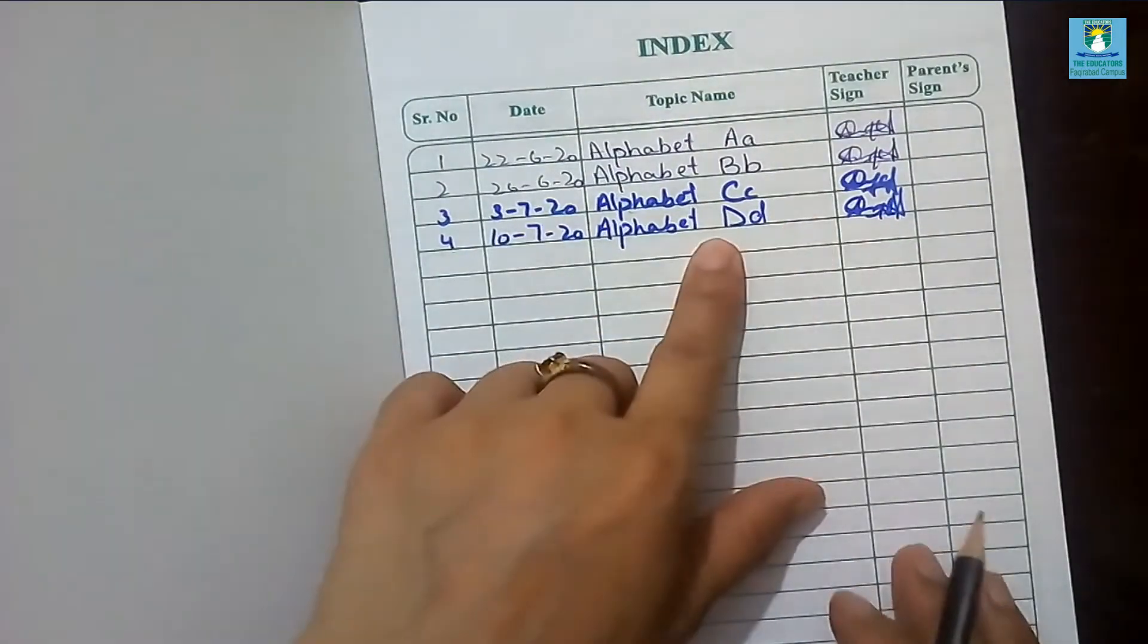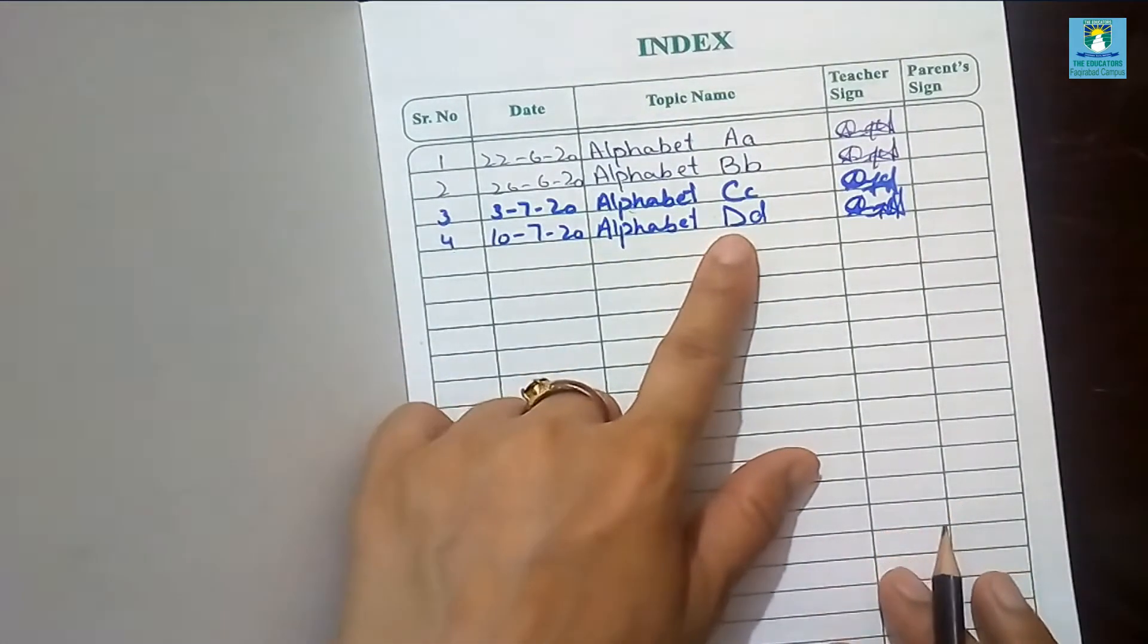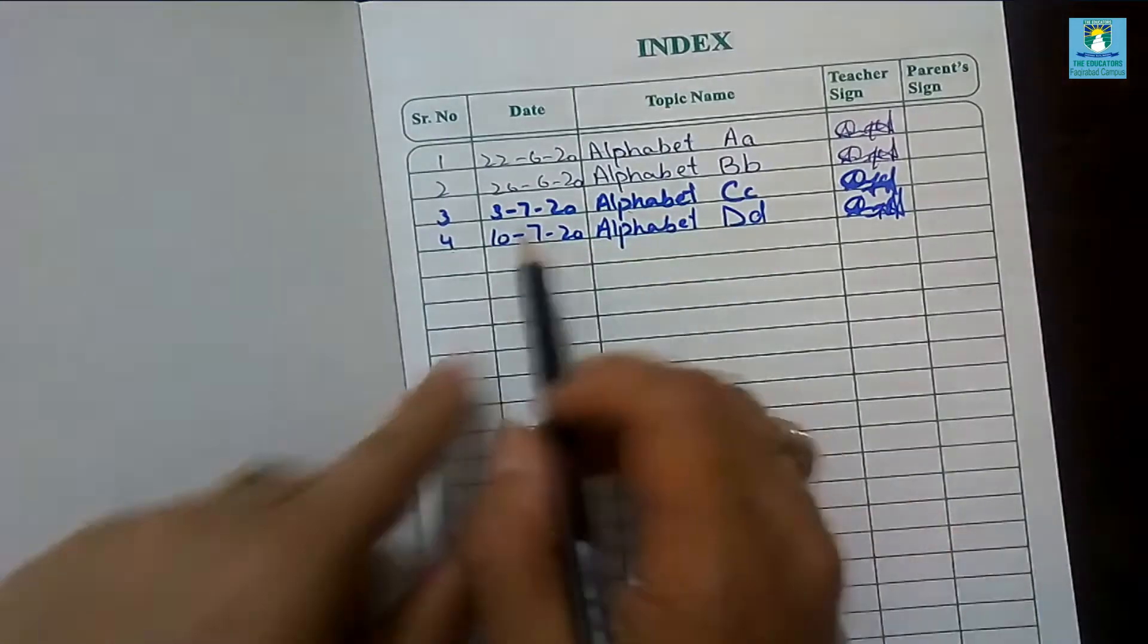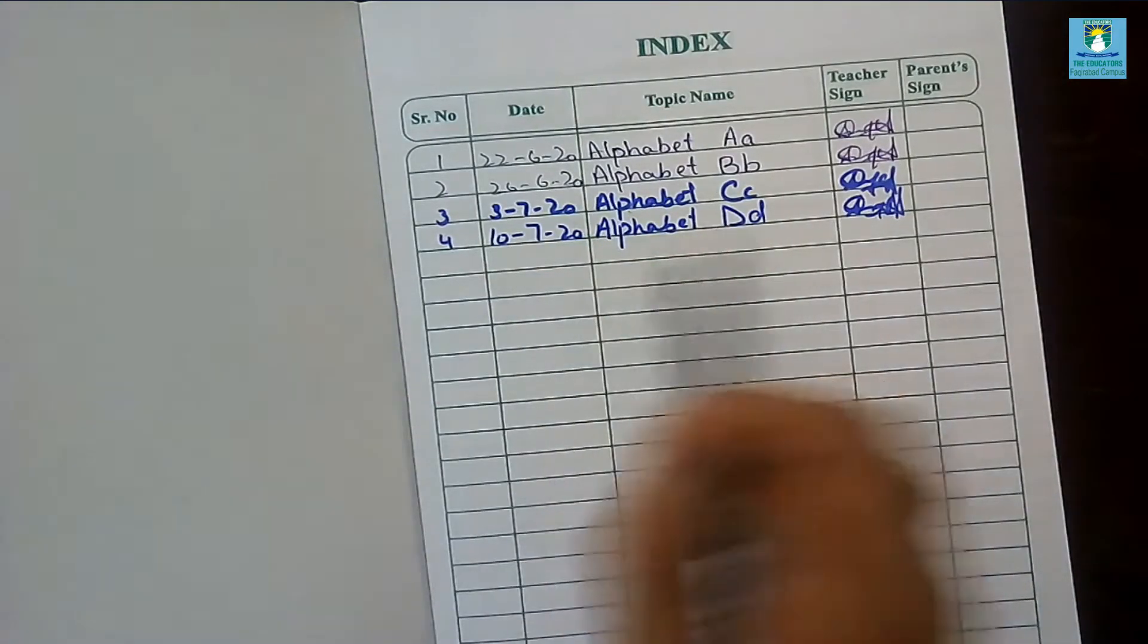What are you writing today? We are writing today alphabet D. Understand? Write the date and mention the topic name.